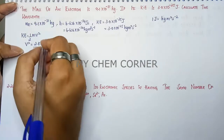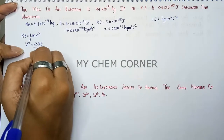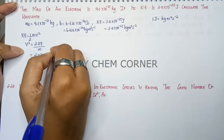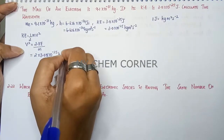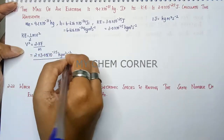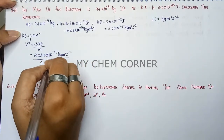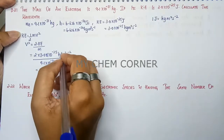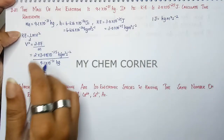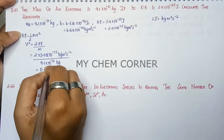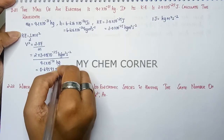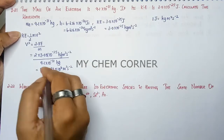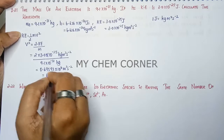Substituting: v² = (2 × 3.0 × 10⁻²⁵ kg·m²·s⁻²) / (9.1 × 10⁻³¹ kg). The kg units cancel. Solving this gives 0.69593 × 10⁶ m²·s⁻², which we shift the decimal to get 65.93 × 10⁴ m²·s⁻².